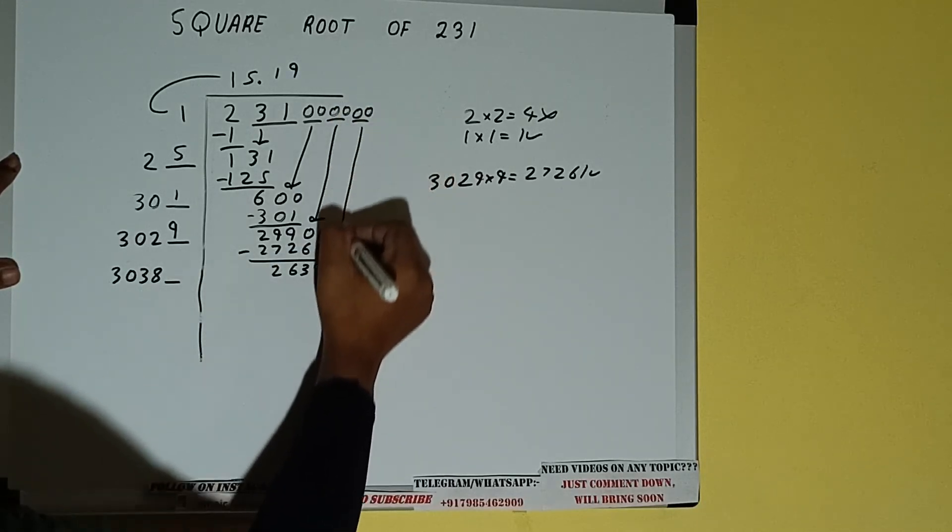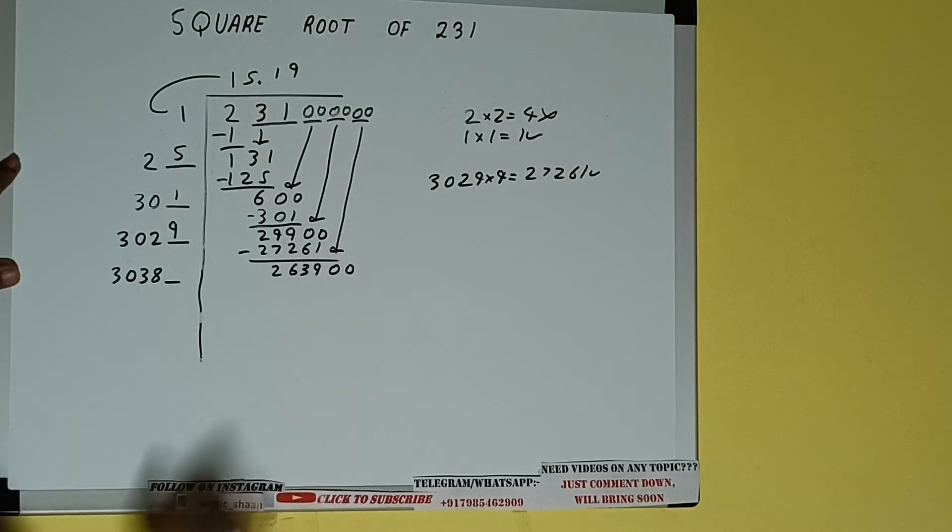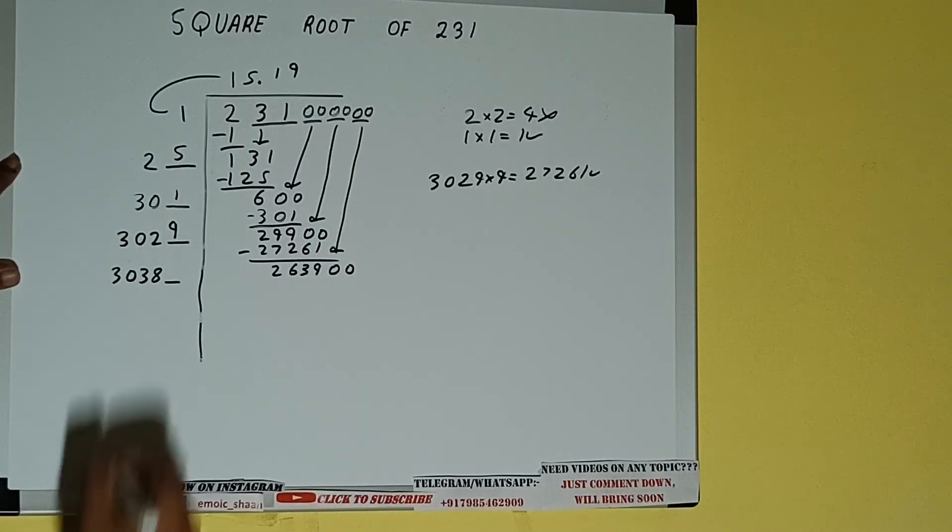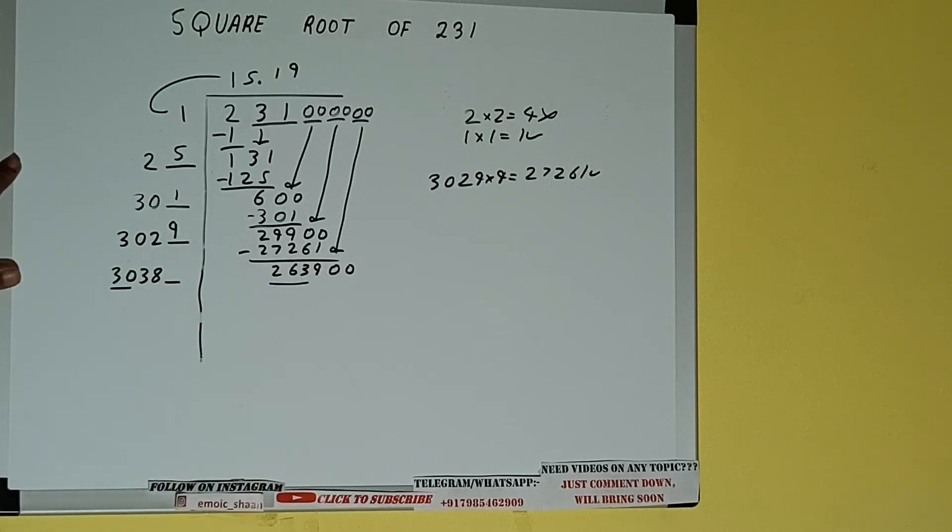So bring the next pair of zeros down, and it will be 263,900. Now compare this 30 with this 263. So 30 times 8 is 240, right? So we can try 8 times.